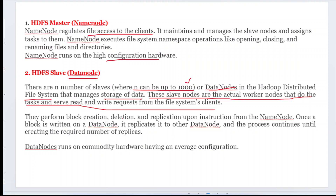With the slave nodes you can perform read and write permissions and many other operations. They perform block creation, deletion, and replication upon instruction from the name node — if the name node instructs to delete files, the data nodes must comply. Once a block is written on a data node, it replicates to other data nodes, maintaining up to three replica copies. These data nodes run on commodity hardware with an average configuration.